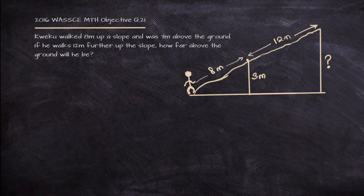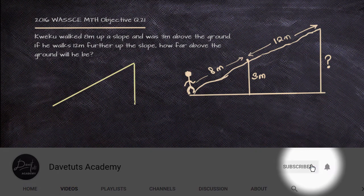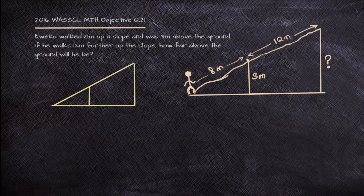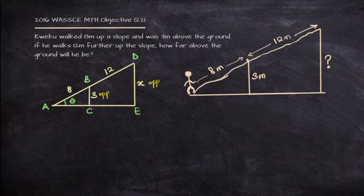Looking at this, you can see that it's going to yield a question in similar triangles. If we draw that out, we have 8 as the smaller hypotenuse and 12 additional, with 3 as the known opposite and x as what we are looking for. Labeling our triangles, we call the angle theta, and from our trigonometric functions, we know the opposite and the hypotenuse — a smaller hypotenuse and a bigger hypotenuse.